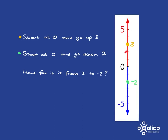If you start at 2 on the number line and go down two steps, you'll end up at zero. If you start at negative 3 on the number line and go up three steps, you'll end up at zero.